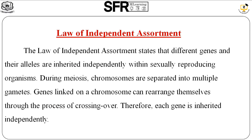The first law of independent assortment states that different characters are expressed through genes and alleles. During gametic formation, the alleles are separated from each chromosome set. Each chromosome set is separated independently — that is why we call it independent assortment. The characters are then expressed in inheritance.